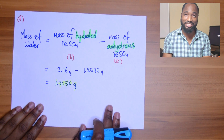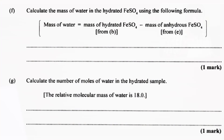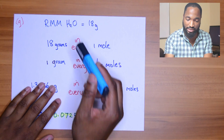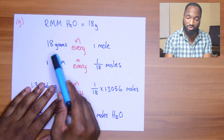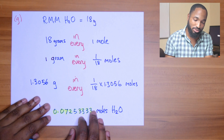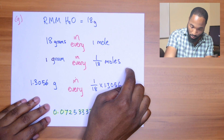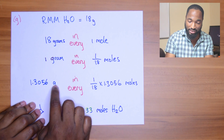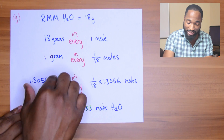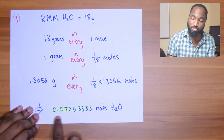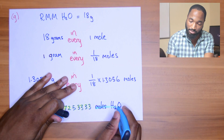Next, calculate the number of moles of water in the hydrated sample - this is a basic grams-to-moles conversion. Water is 18 g/mol because H2O is 2 + 16. So if 18 grams equals one mole, one gram equals 1/18 moles - find for one again. We found 1.3056 grams of water, so the number of moles of water is 1/18 × 1.3056 moles. That gives us how many moles of water are in the sample.